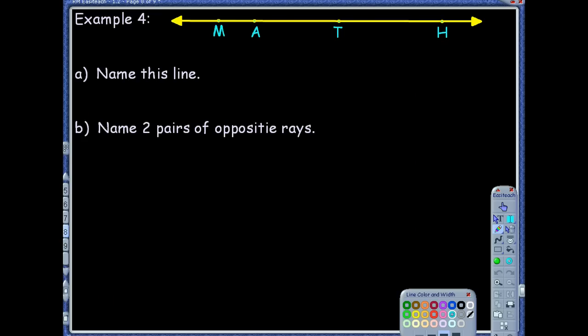Example four. So we got a picture here. It says, name this line. So Mrs. Hiltgravy, what would you name this? Well, you know, my first instinct would be to call this line math, M-A-T-H. But we know that you can't do that because to name a line, all we need are two points. Good job.